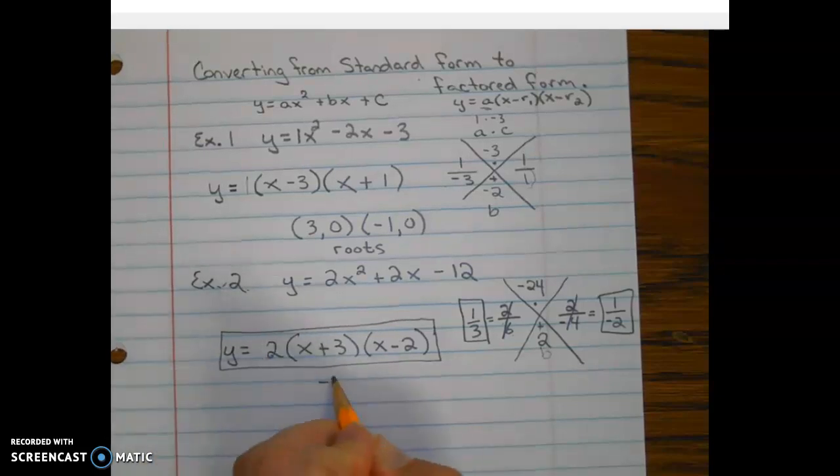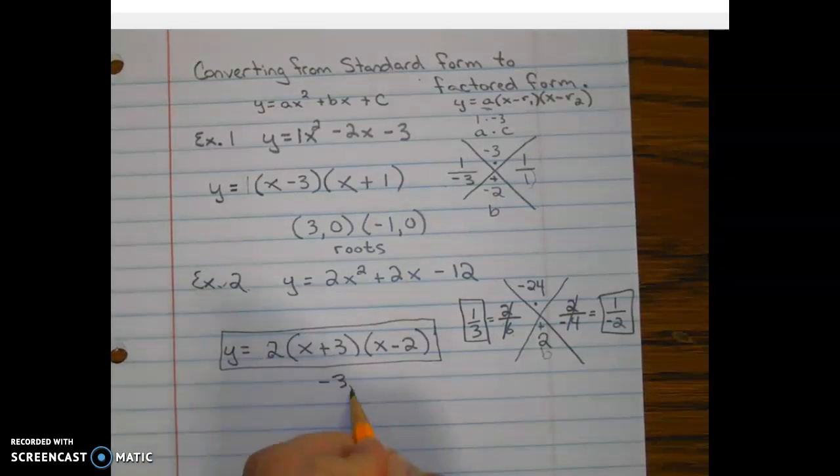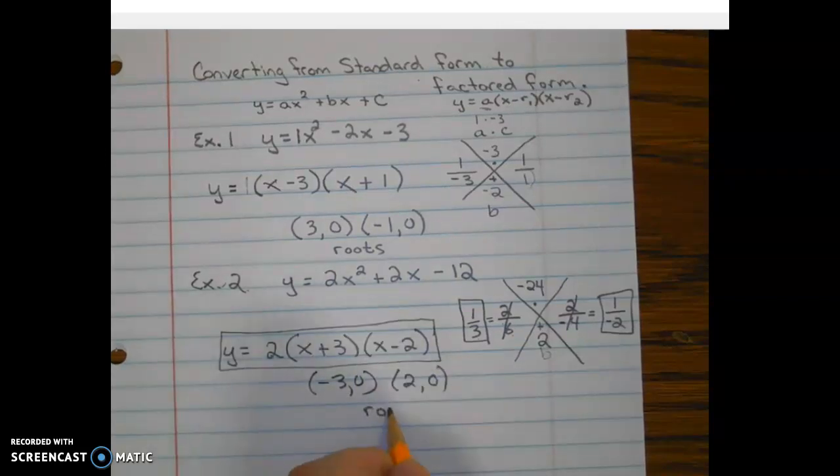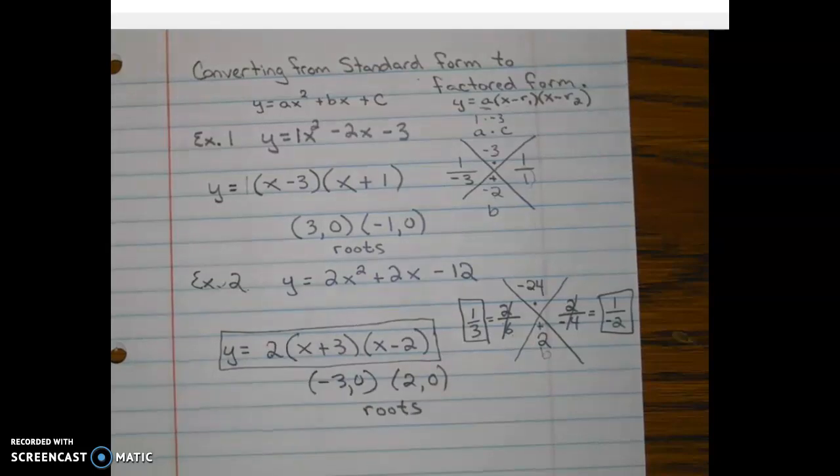So we have an A value of 2. So we have a vertical stretch. It's opening up. We know our roots are (-3, 0) and (2, 0). Those are our roots.